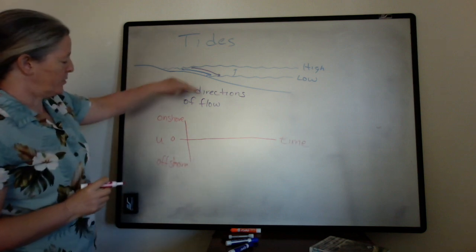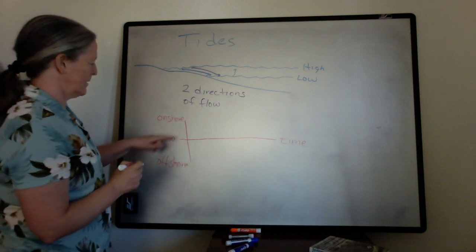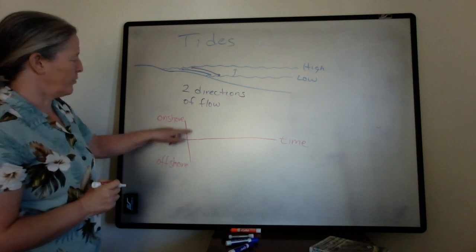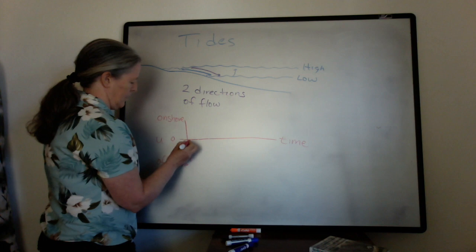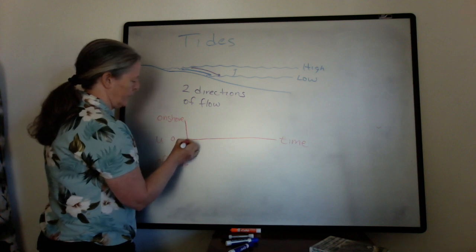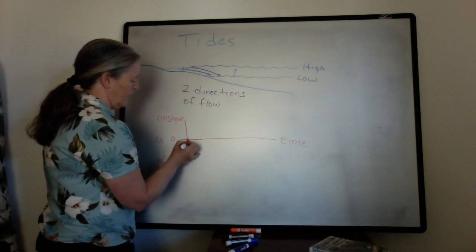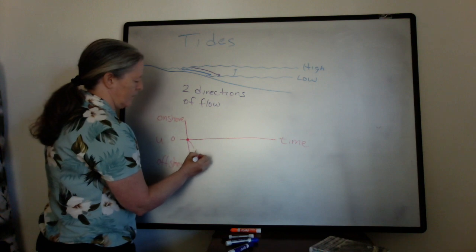One of the things that happens when the tide is rising: you start out at the low tide, which is zero here. So the flow speed is zero. We'll say that this is at low tide.